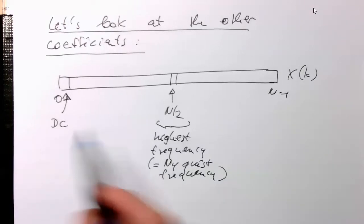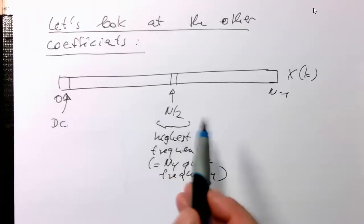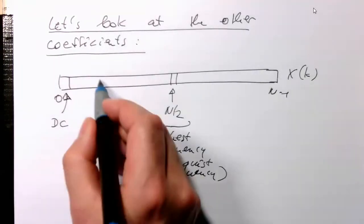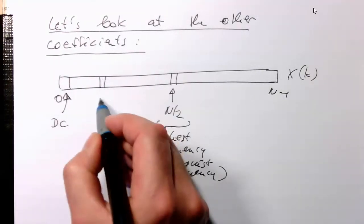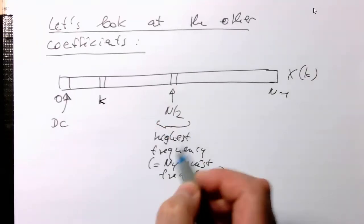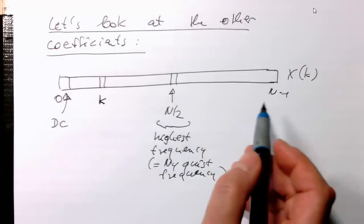So obviously between here and here the frequency slowly goes up. If we have here a coefficient k here, then this is obviously a fraction of the whole range here.